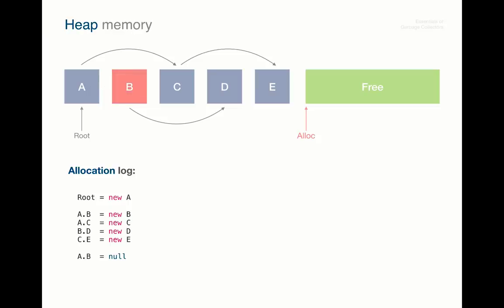This makes the object B, as well as its direct child, the object D unreachable from the root, and they become good candidates for the garbage collection. But yet let's continue allocating the objects. So we allocate the next object F and, as previously, just bumping the allocation pointer. Such allocation strategy is known as the sequential allocation, or the bump allocation.